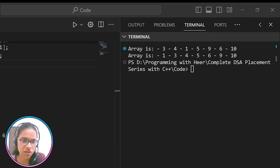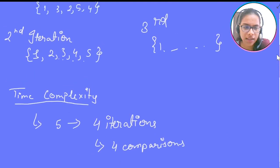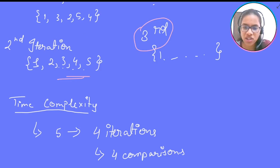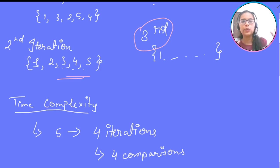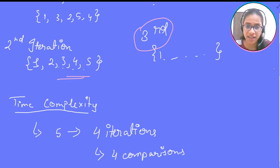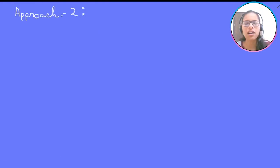Let us now optimize the solution. In the example we saw earlier, the array was already sorted after the second iteration and there was no need for the third or fourth iterations. What if we have a flag in the second iteration itself that indicates whether the array is sorted or not? If sorted, we stop; otherwise we proceed to the next iteration. This is the intuition — let's build our approach on it.